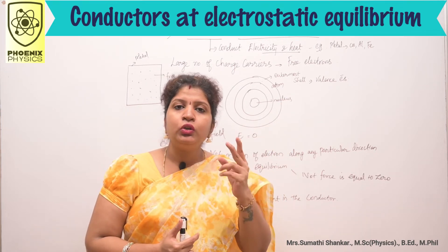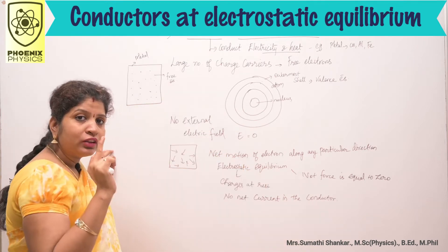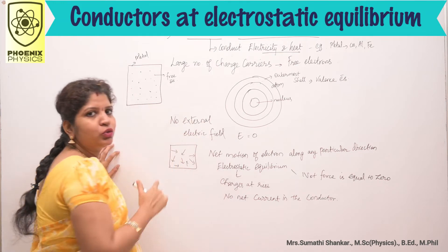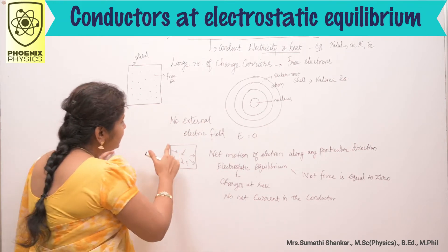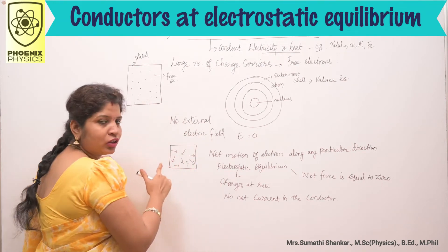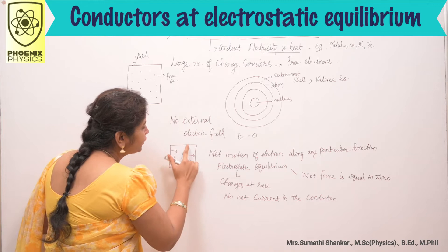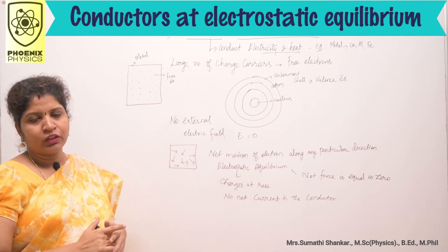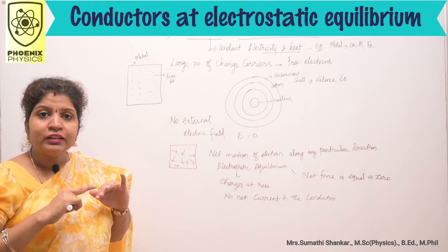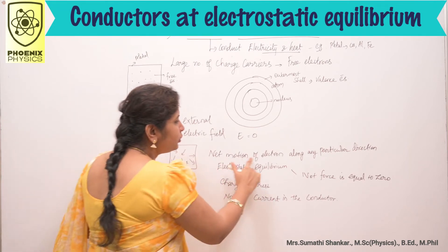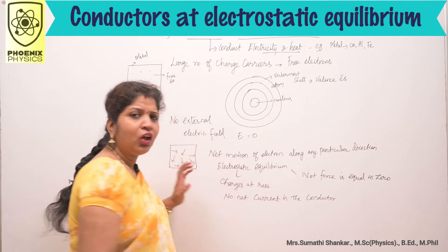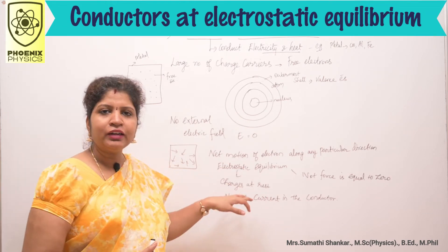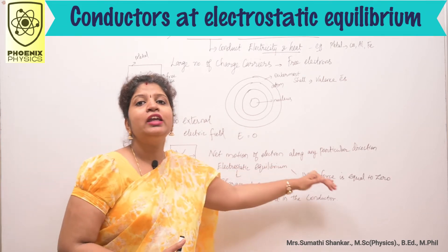Next, we will discuss two cases. Suppose there is no external electric field, which means E is equal to 0. These free electrons are in continuous random motion in all directions. As a result, there is no net motion of electrons along any particular direction. This is said to be electrostatic equilibrium.